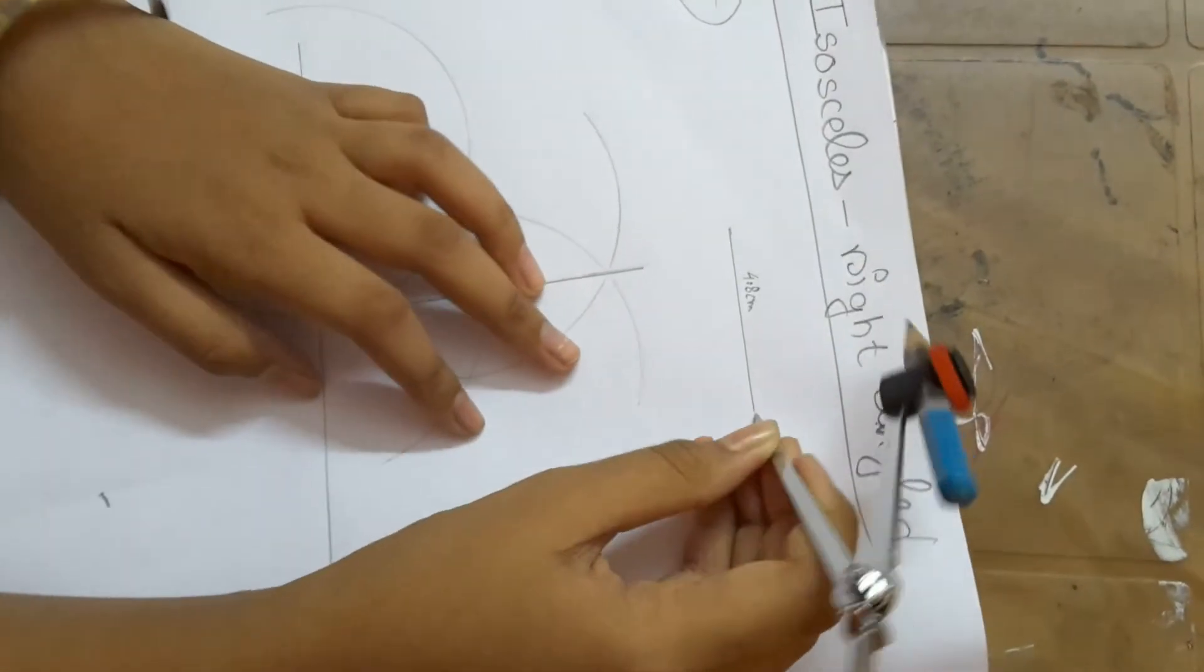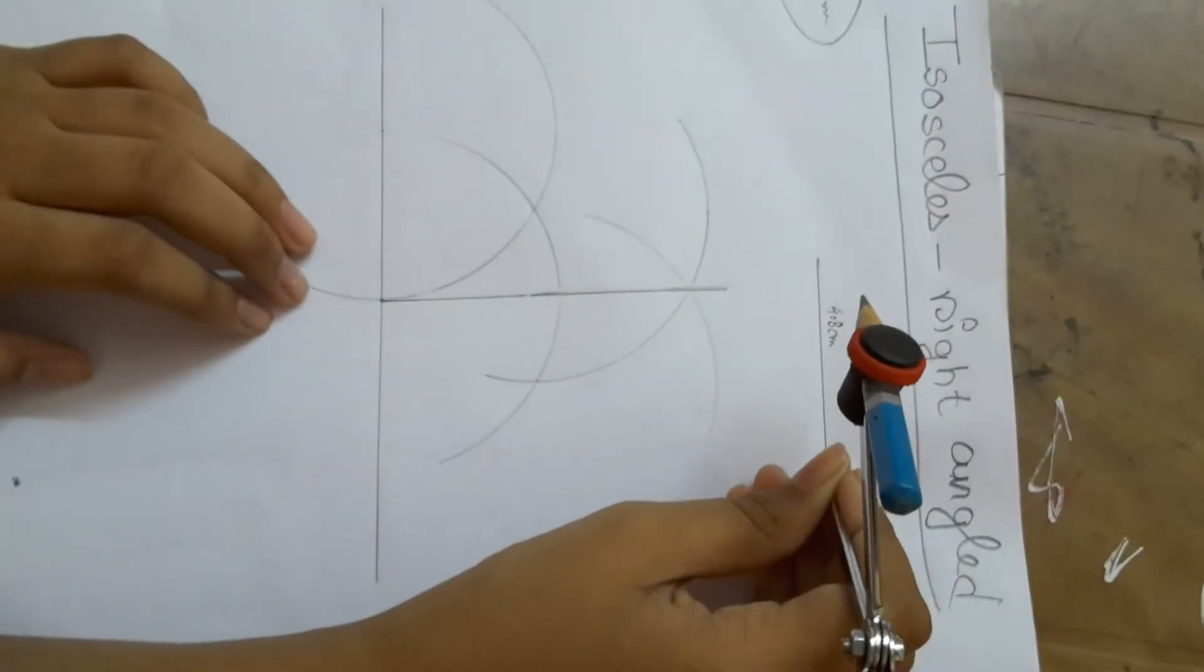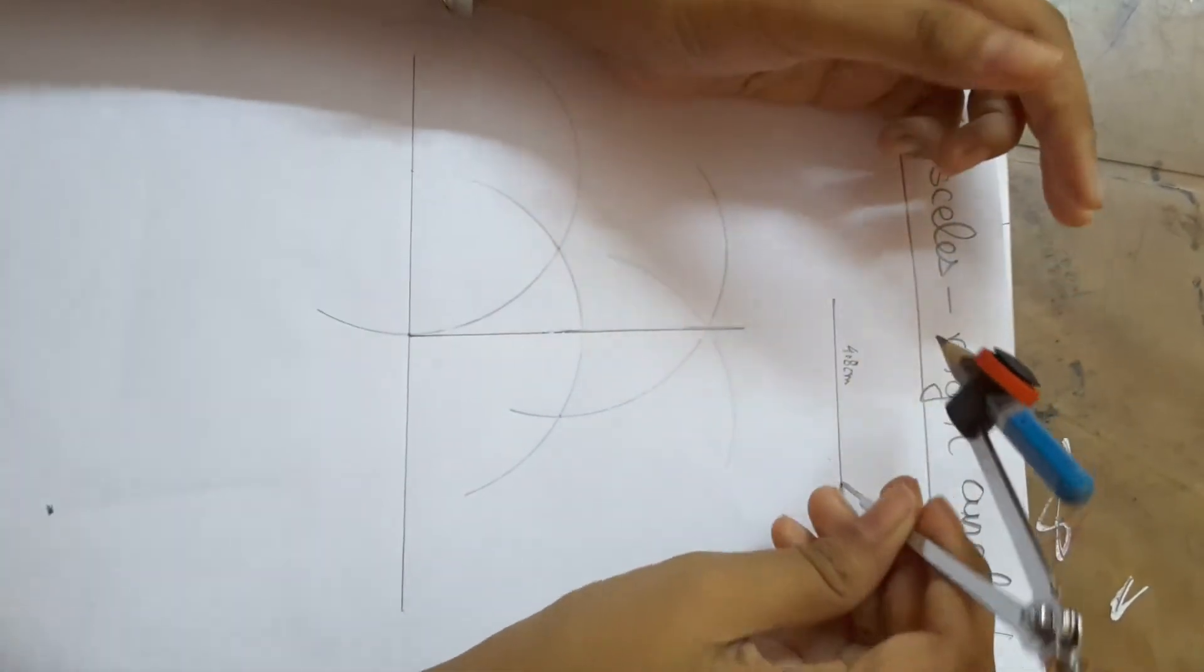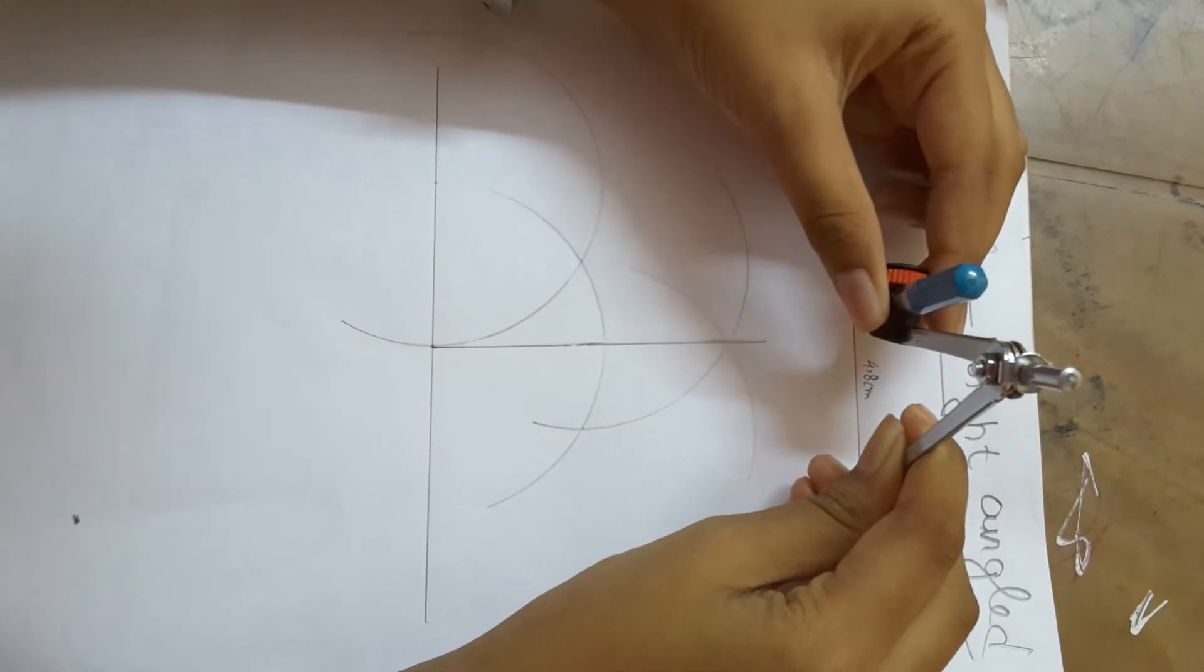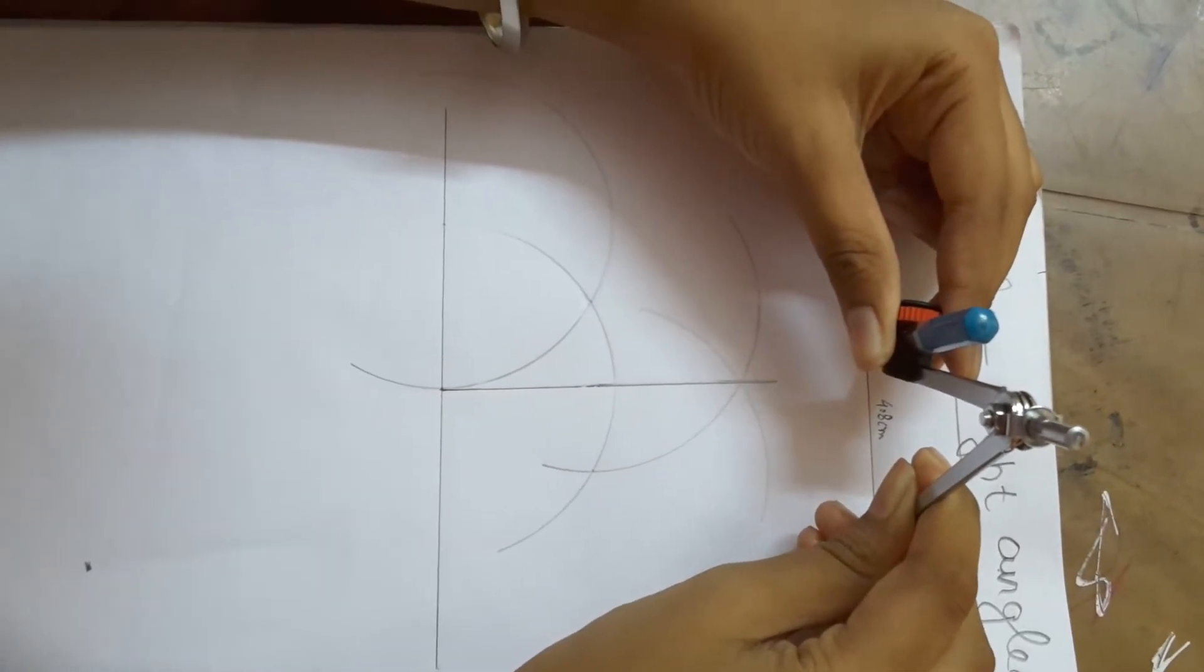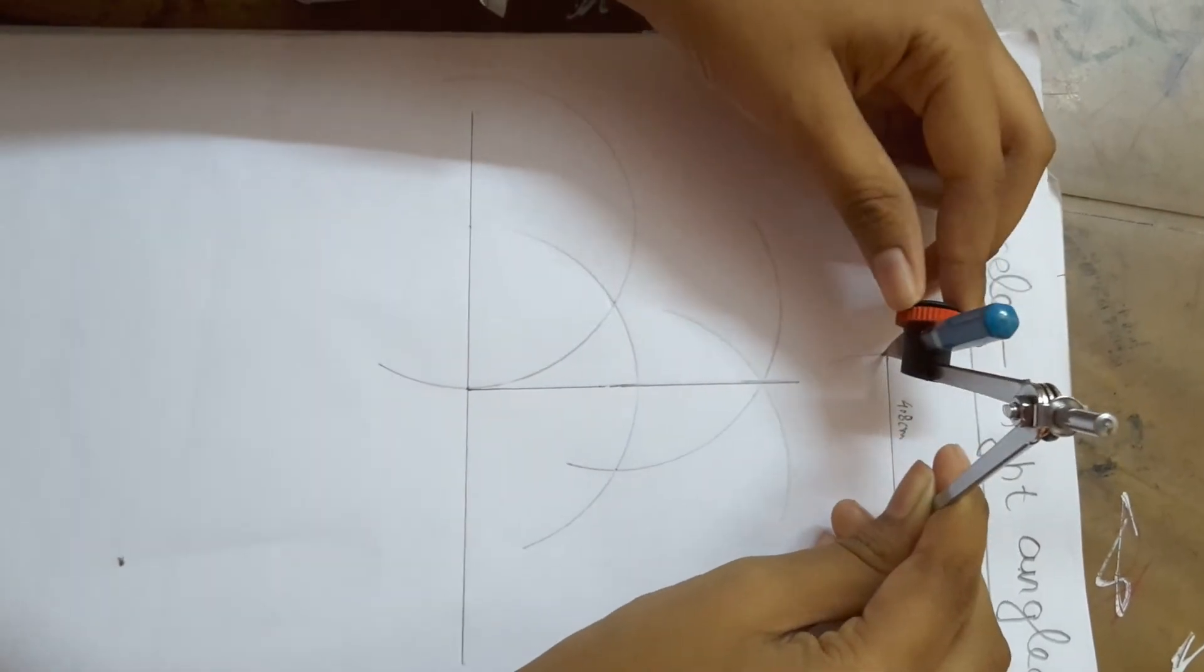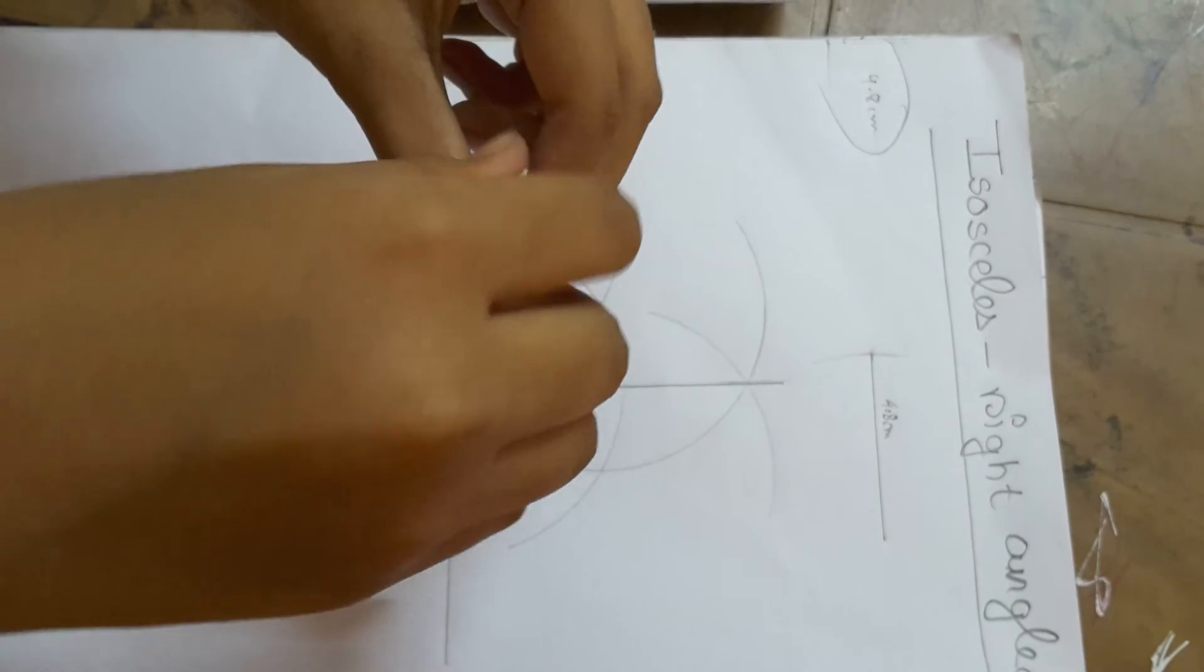Take the measurement with the help of a compass. Taking the measurement. This is the correct measurement and cut it from here.